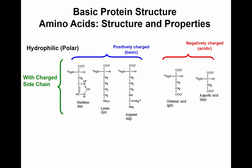Lysine has an additional primary amine. Primary amine is more reactive than secondary or tertiary amine because it has three protons — so it is more reactive. Arginine has a secondary amine that is charged. All three of these amino acids are basic, meaning they are positively charged at neutral pH.